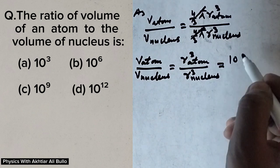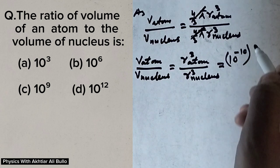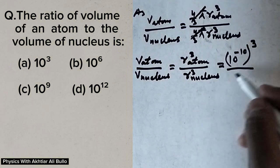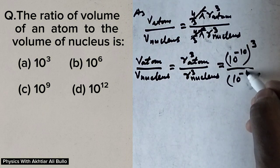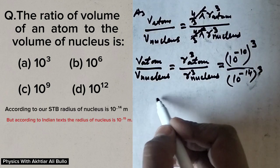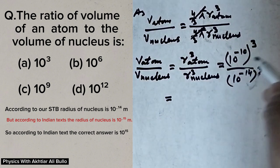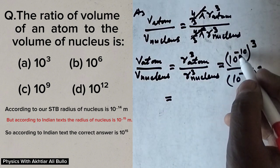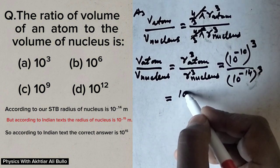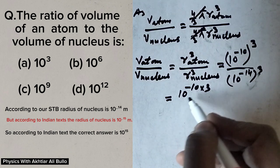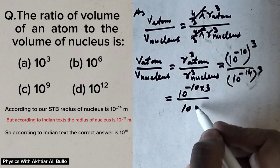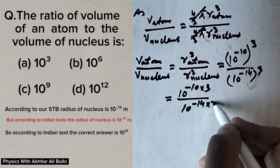The radius of the atom is 10 raised power minus 10, so the whole cube is (10⁻¹⁰)³, divided by the radius of the nucleus which is 10 raised power minus 14, so the whole cube is (10⁻¹⁴)³. This gives 10 raised power minus 30 in the numerator and 10 raised power minus 42 in the denominator.